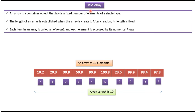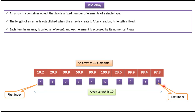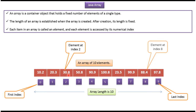In this video tutorial I will cover how to store double values in a Java array. Here you can see an array of 10 elements and the length of the array is 10. This is the first index and this is the last index. In index position 2 the element is 30.8, and in index 8 the element is 88.4. This array contains 10 double values.